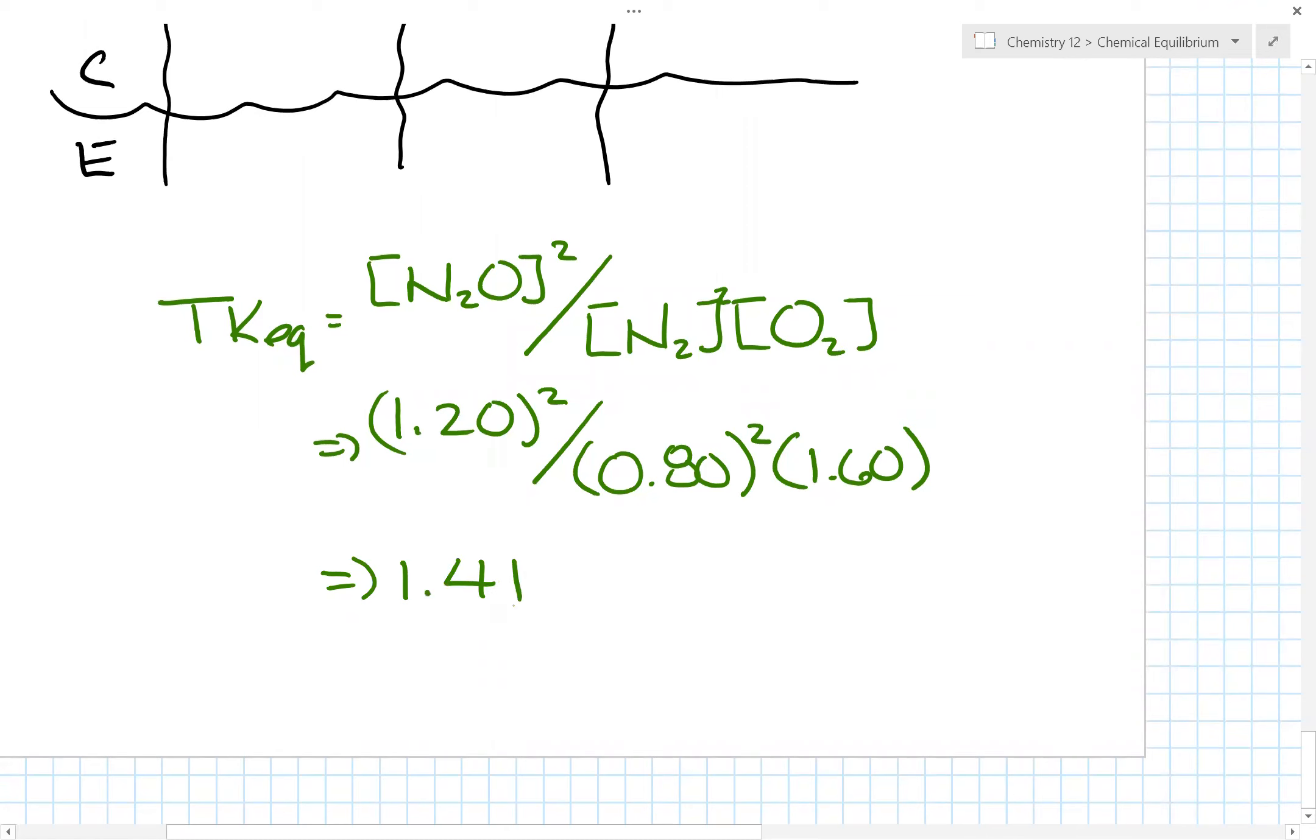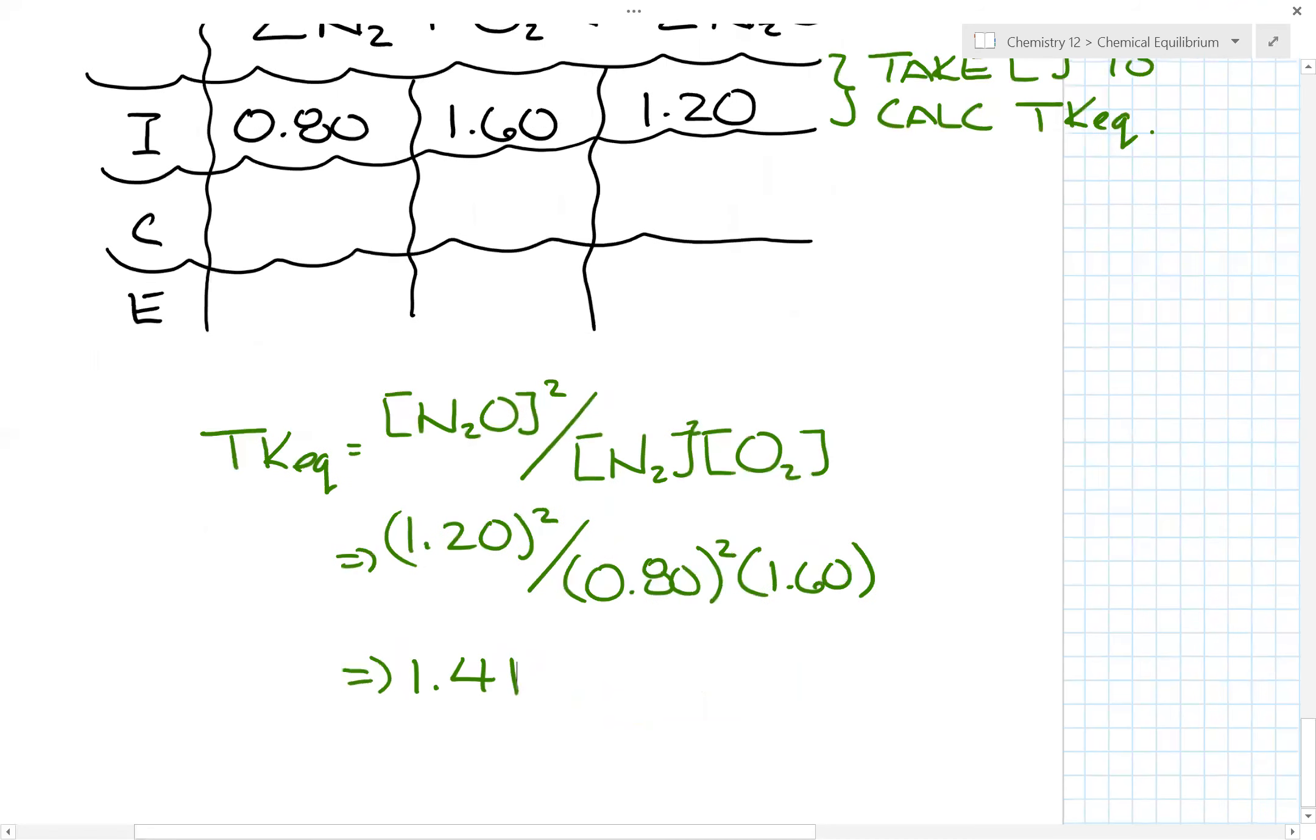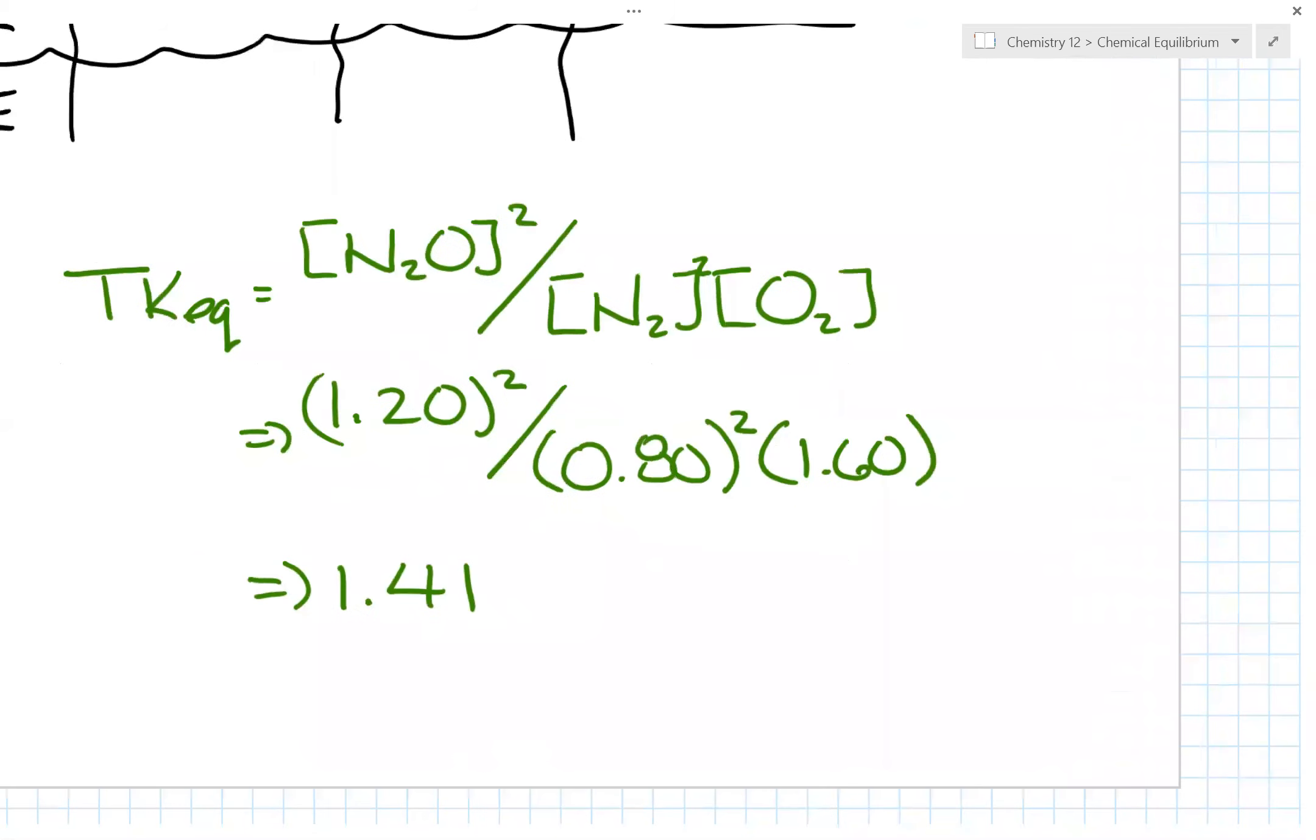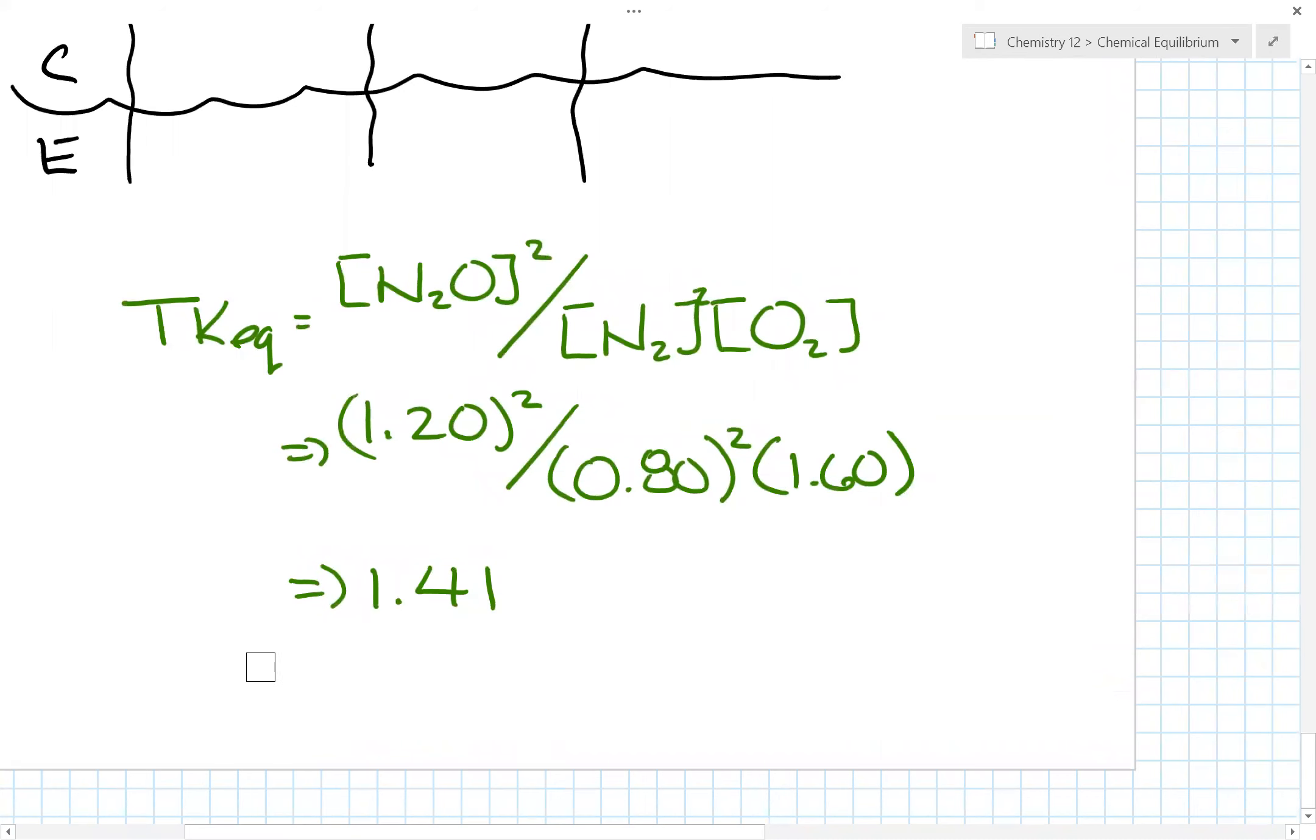Now what is the significance of this number is basically saying that the ratio of products over my reactants is 1.41. Now in this case, the trial Keq is greater than Keq. Therefore, what that means is too much product initially.